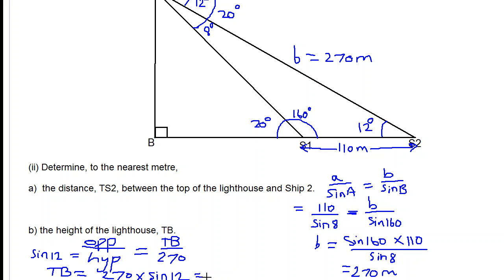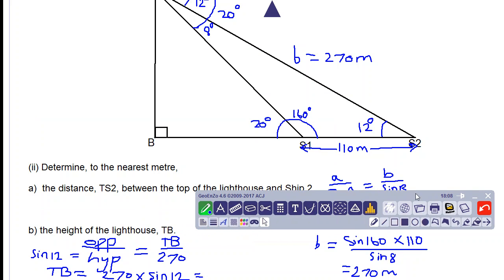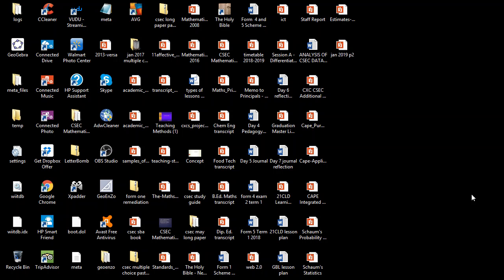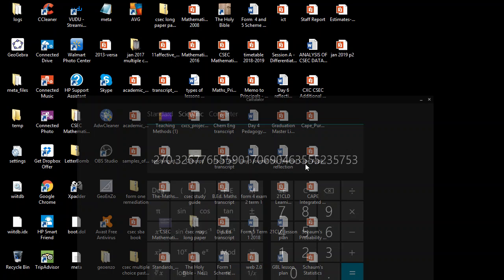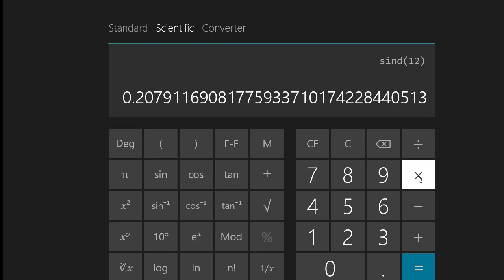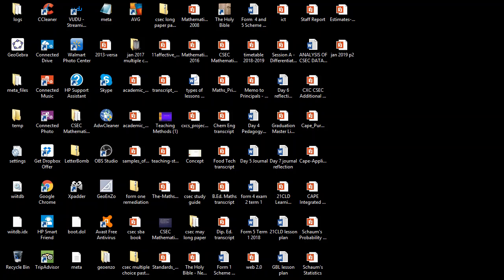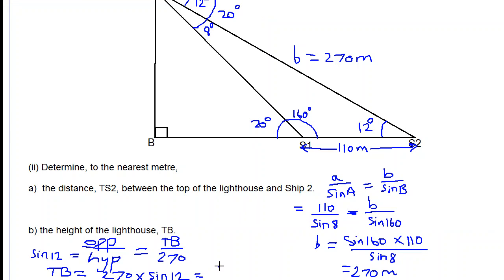Okay, so we will call that in our calculators. 270 times sine 12. And we get 56 meters to the nearest meter. So the answer is 56 meters.